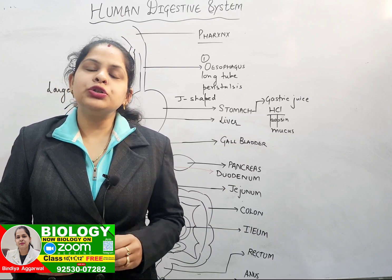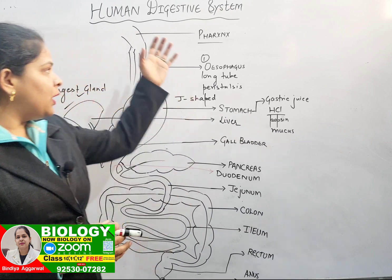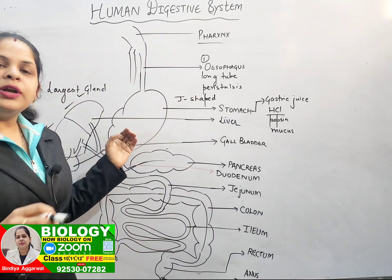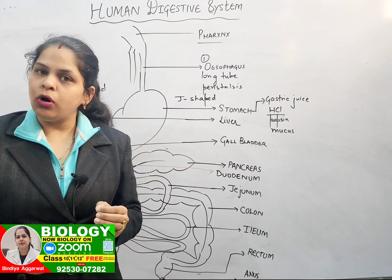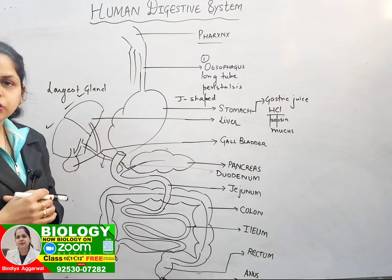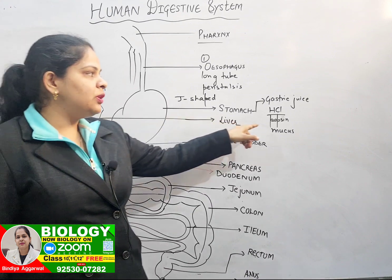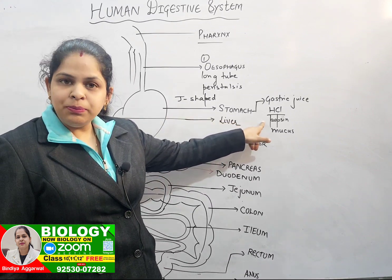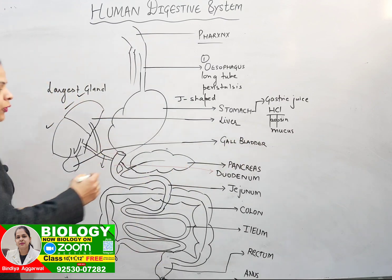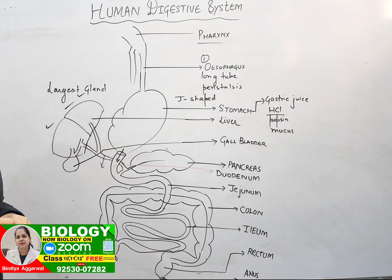Digestion starts in the mouth itself. The partially digested food then comes into the stomach — this partially digested food is known as bolus. Inside the stomach, further partial digestion takes place with the help of pepsin, which works to break down proteins. After that, the food moves into the duodenum.